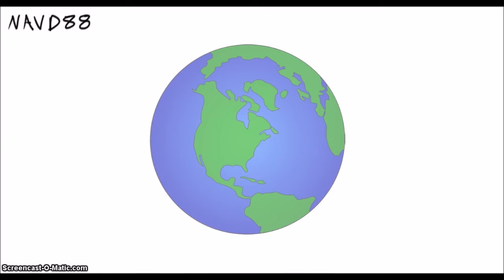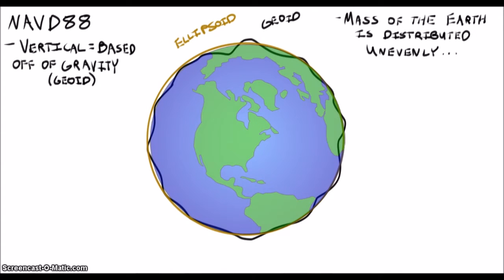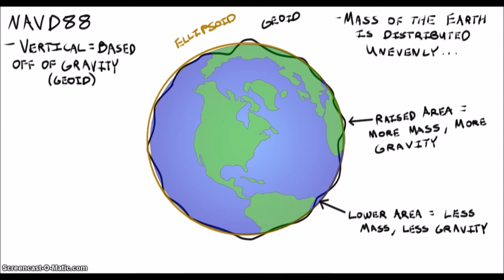NAVD88 is an orthometric datum, or a datum based on gravity. If the Earth were a smooth ball of uniform material, there would not be any difference between orthometric and geometric datums. Unfortunately for us, there are mountains and oceans and giant pots of gold buried underground, and all of these have gravitational effects.